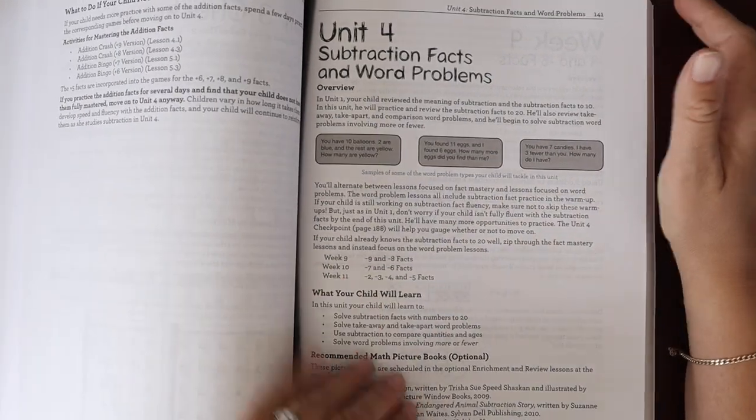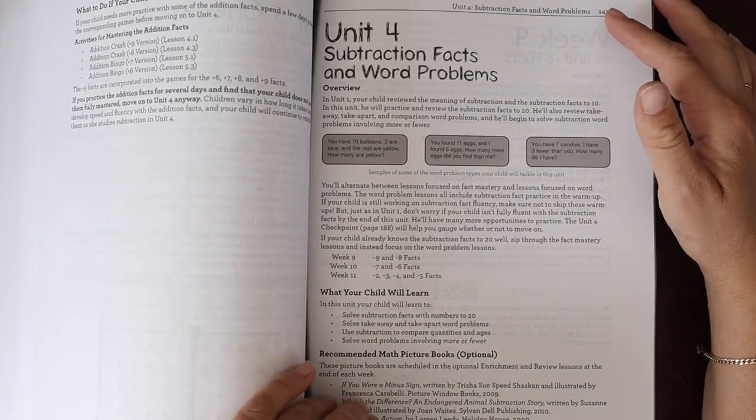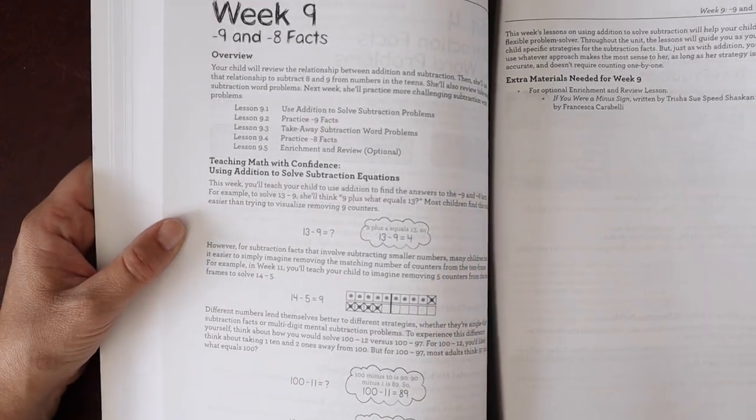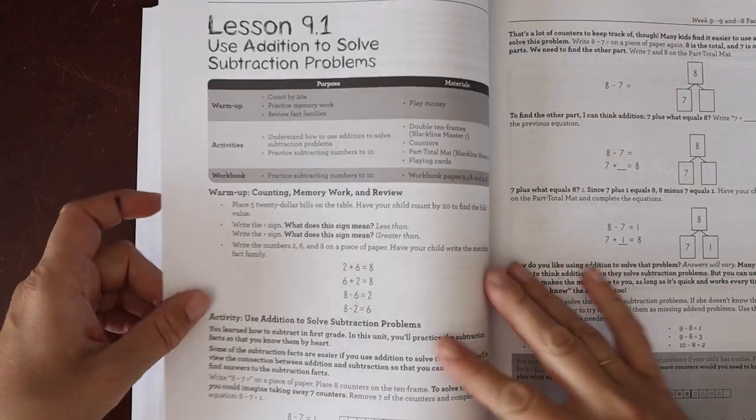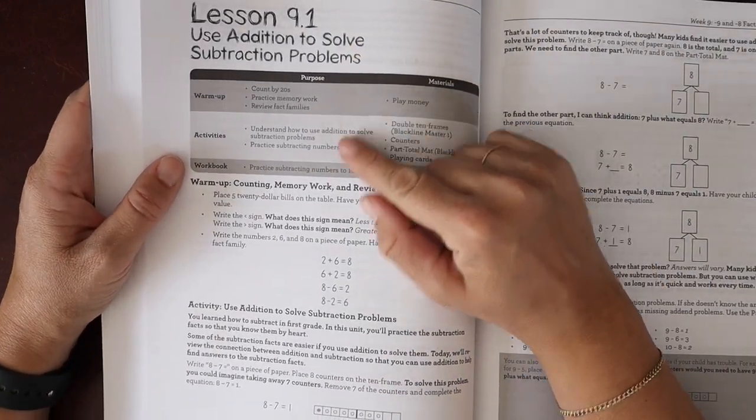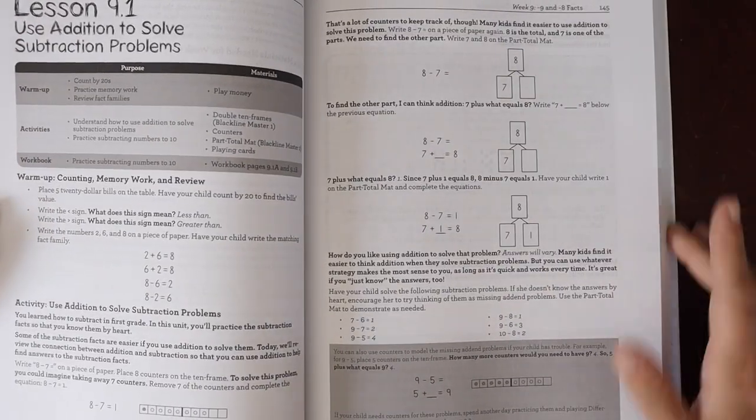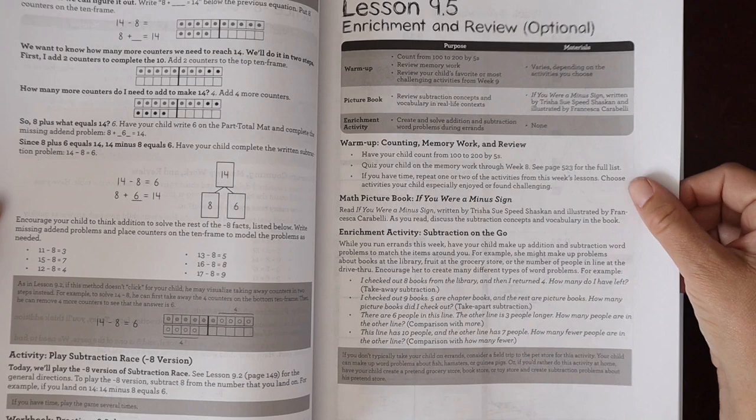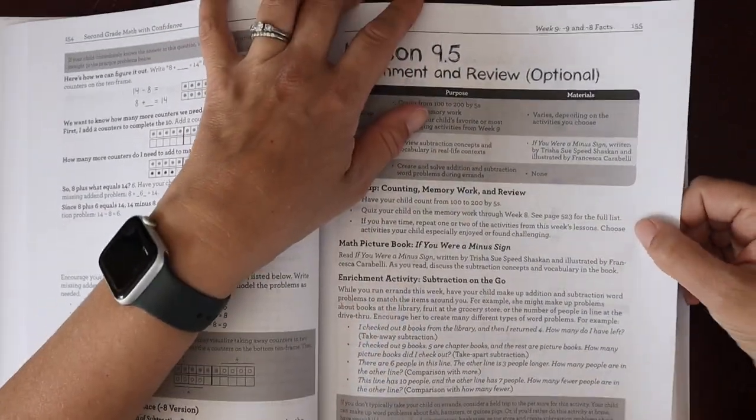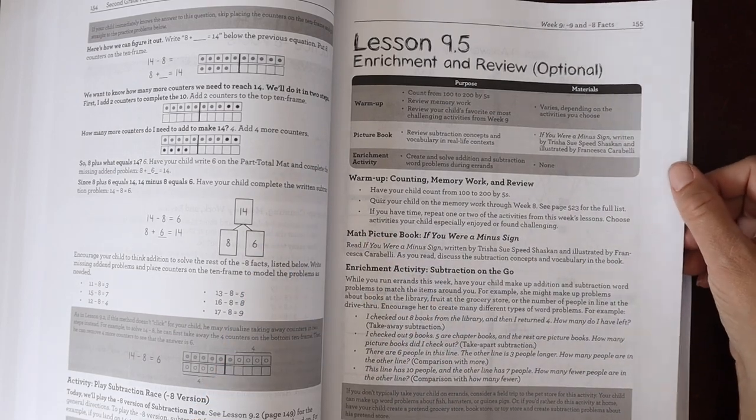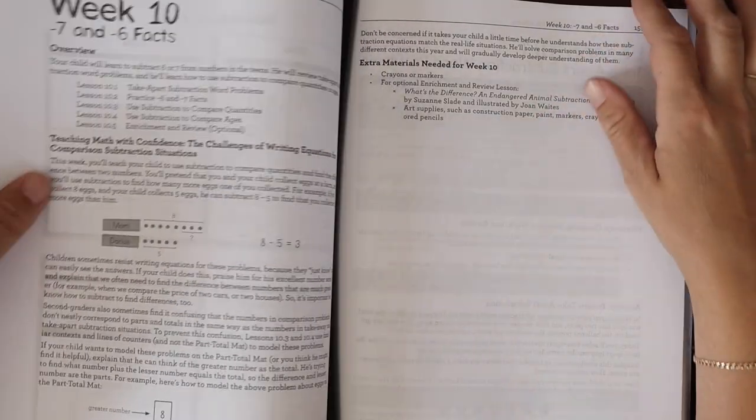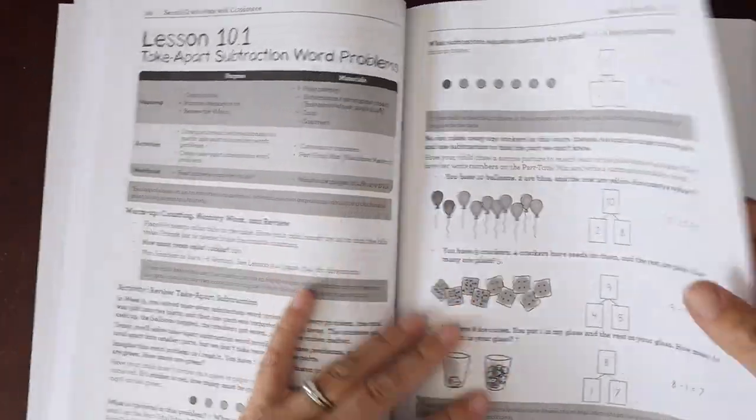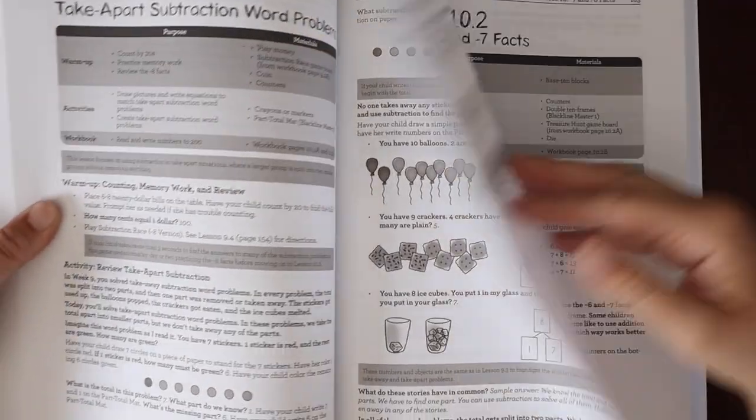So we have unit four, we have our unit overview, and then we have our week overview. And so with week nine we're doing minus nine and minus eight facts. The teaching with confidence - how do we do this? Lesson 9.1 is use addition to solve the subtraction problem, so again we're teaching the strategies through games. Here's Difference War. I know a lot of folks really like Singapore Math for the concrete pictorial abstract approach, and you know, for what it's worth, Kate Snow also kind of follows that, right? So we have working with the manipulatives for the concrete, we have doing pictorial with our workbook, and then we also have abstract with the mental math and with our math algorithms problems. So we have take apart subtraction word problems and then we are practicing more facts.